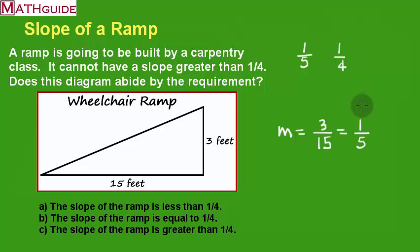All right, so what I like to do is be able to compare the two. Well, if I multiply this denominator by four, I have to multiply the numerator by four. That'll give me 20ths.